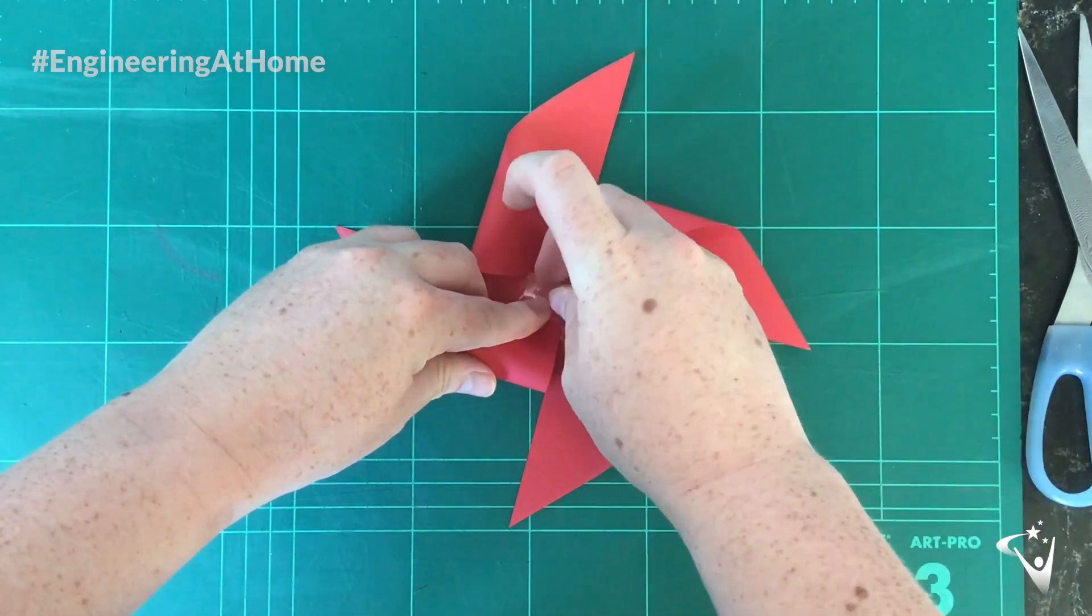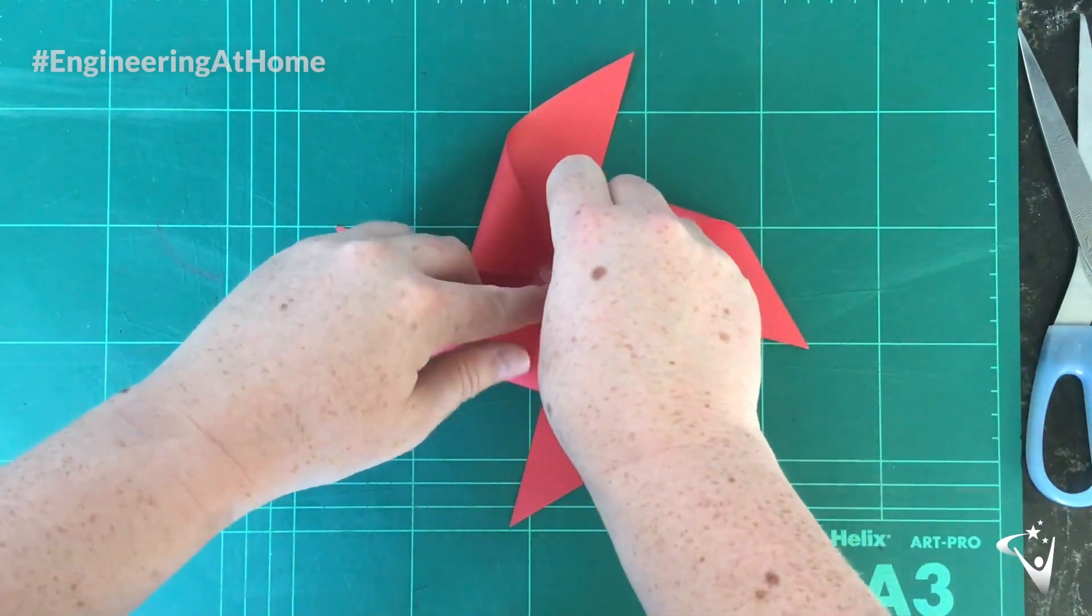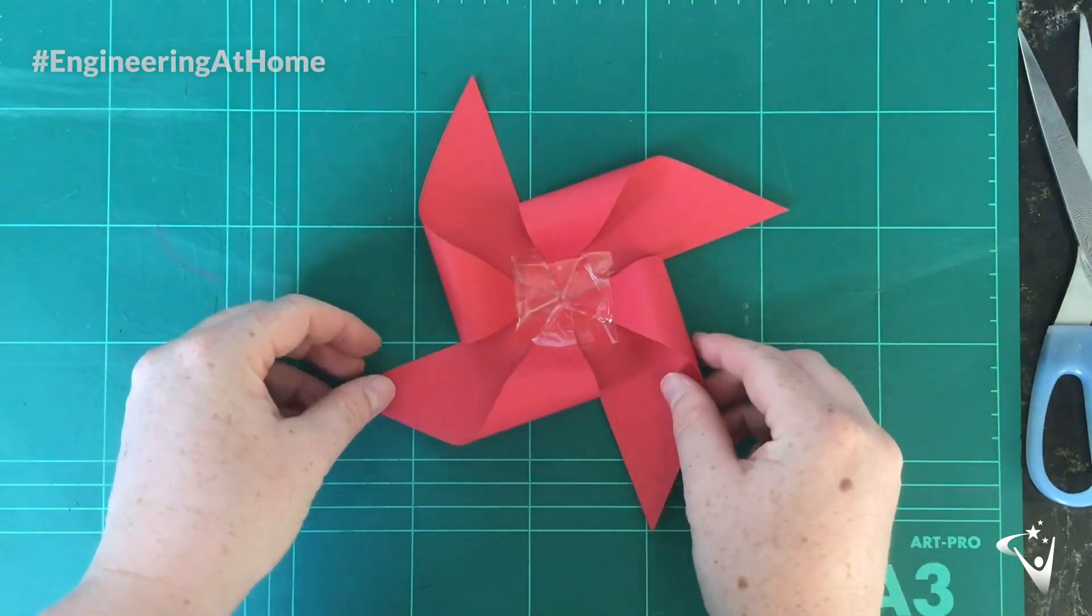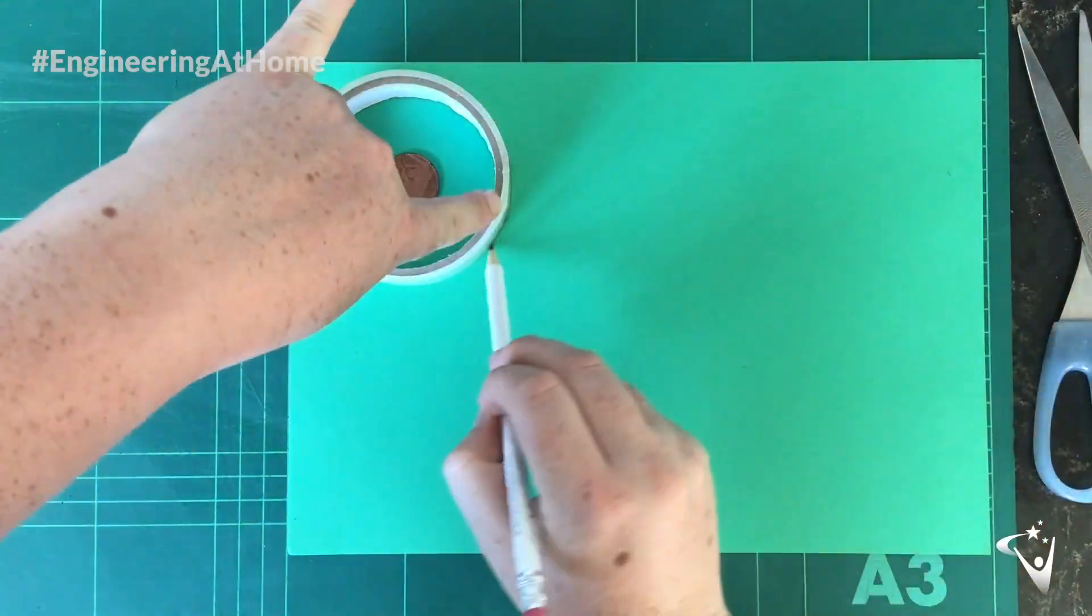When all of your corners are folded into the middle and have been taped down you have now made a pinwheel. Now onto the second way to build a propeller.